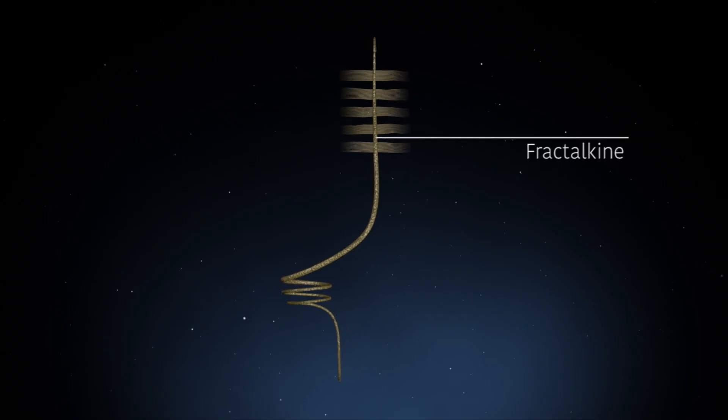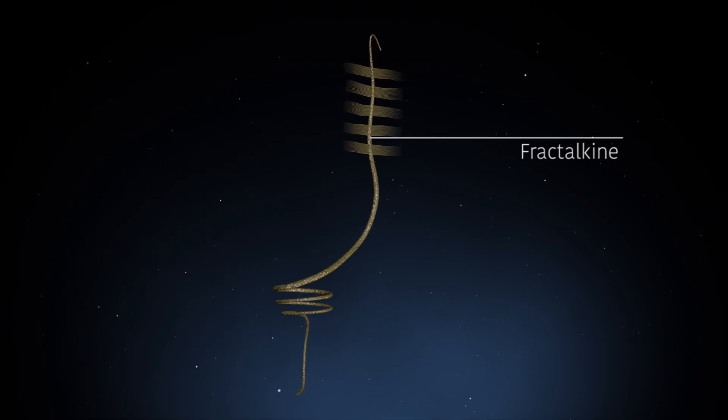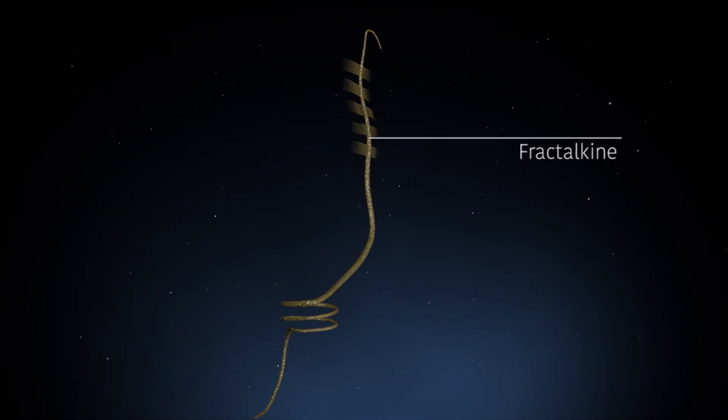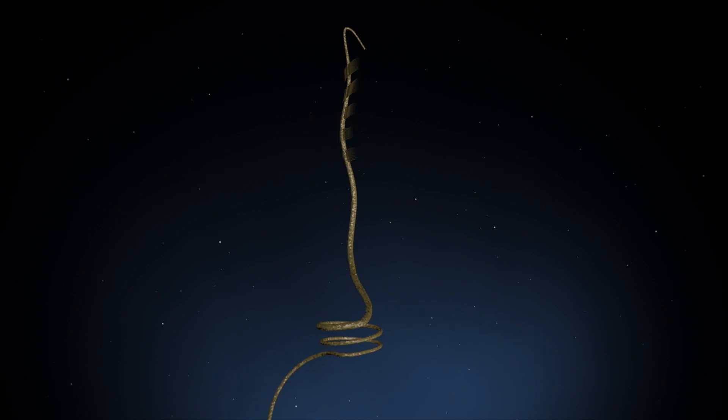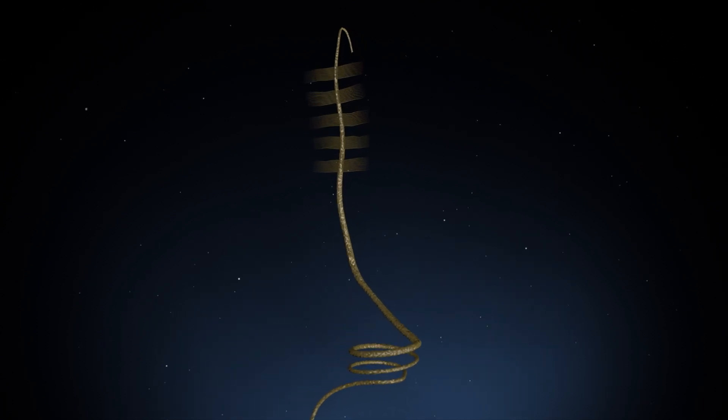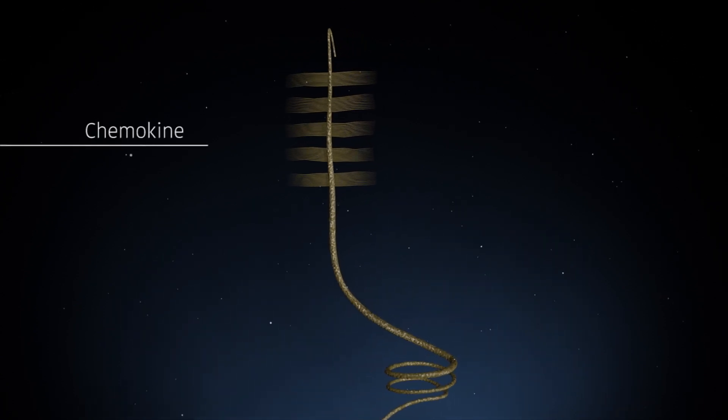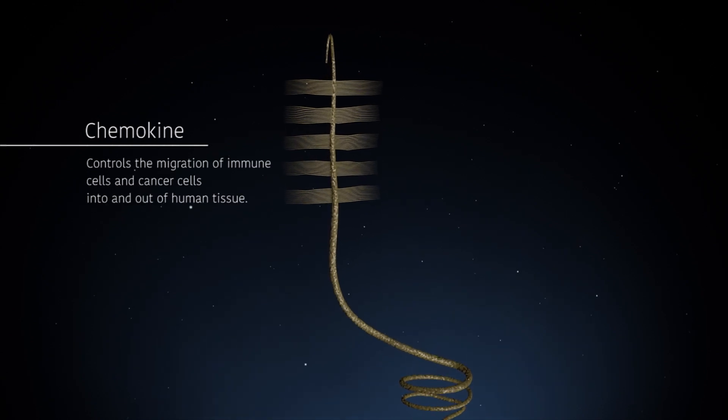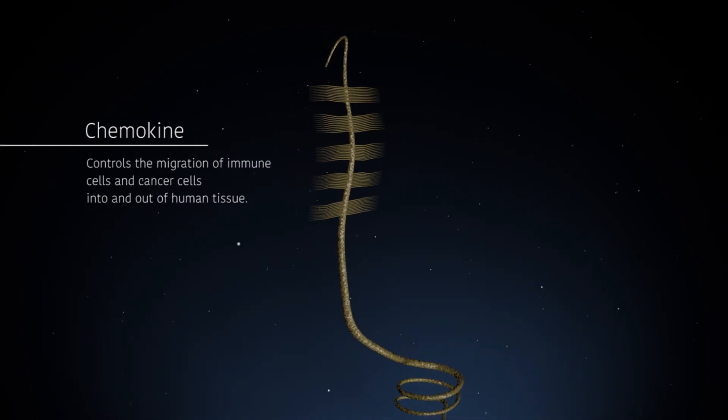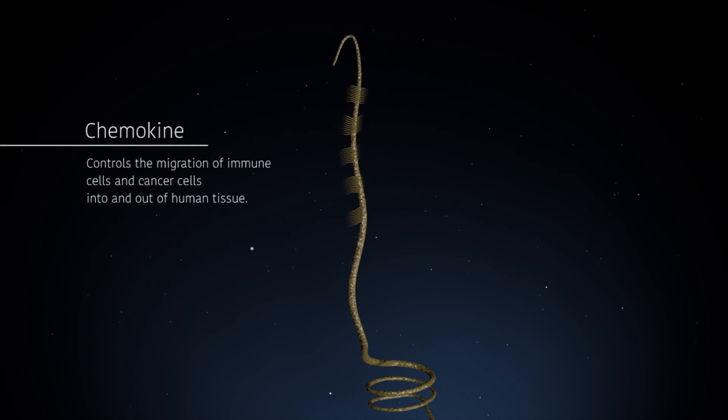The fractalkine system is part of our non-specific immune system that can go for an attack without delay. Fractalkine belongs to a group of signaling substances called chemokines. Chemokines control the migration of immune cells and cancer cells into and out of human tissue.